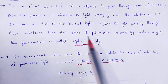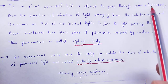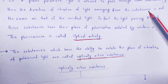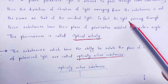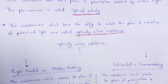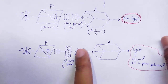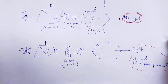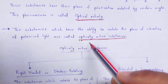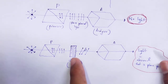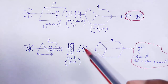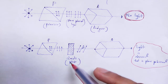So, when a plane polarized light is allowed to pass through some substances, the direction of vibration of light emerging from the substances is not the same as that of the incident light. The light passing through these substances has its plane of polarization rotated by a certain angle — this phenomenon is called optical activity. The substances which have the ability to rotate the plane of vibration of polarized light are called optically active substances. An example of an optically active substance is a quartz plate.